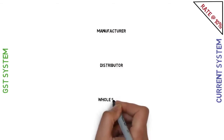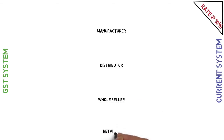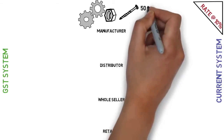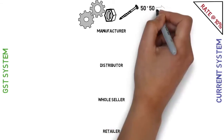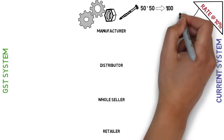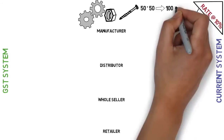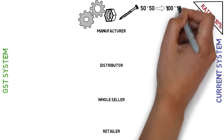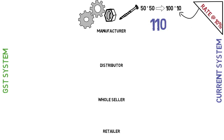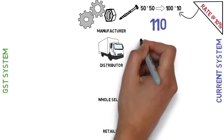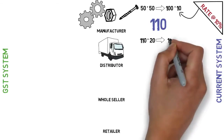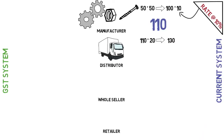There are generally four levels: manufacturer, distributor, wholesaler, and retailer. The manufacturer buys raw material of rupees 50 and manufactures a product, adding 50 rupees of value, so the product becomes 100 rupees. He pays 10 percent tax, which is 10 rupees, so the cost of the product for the distributor is 110 rupees.